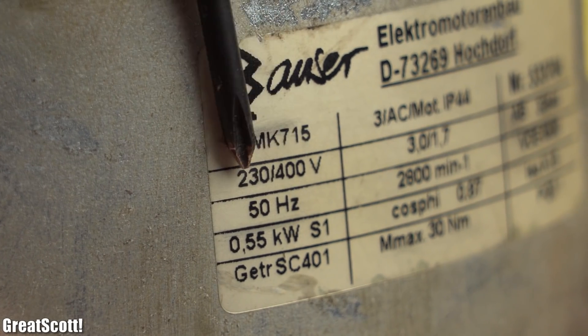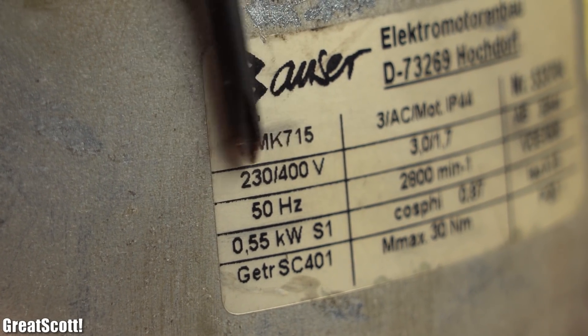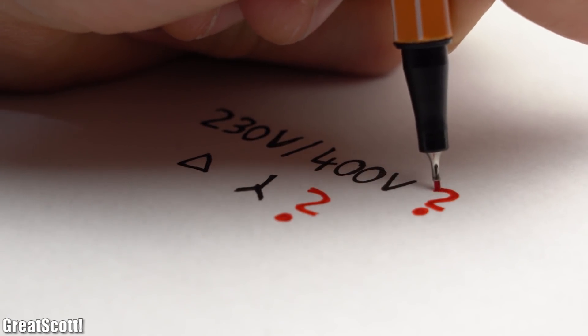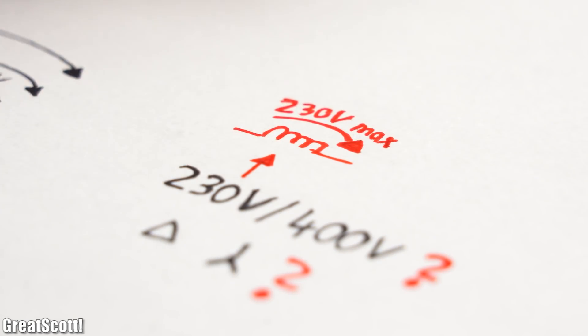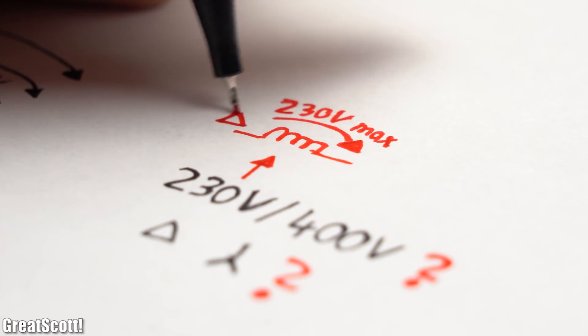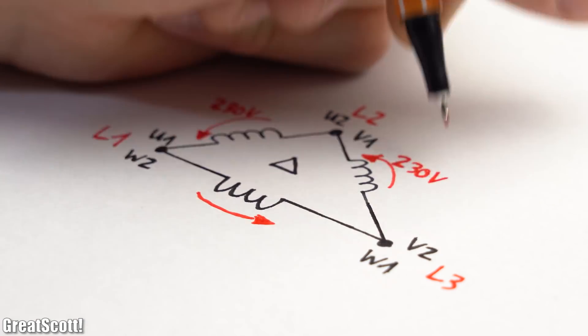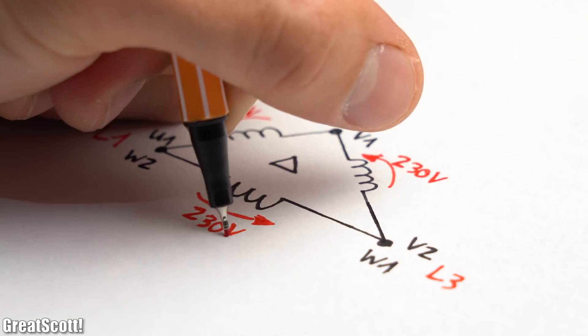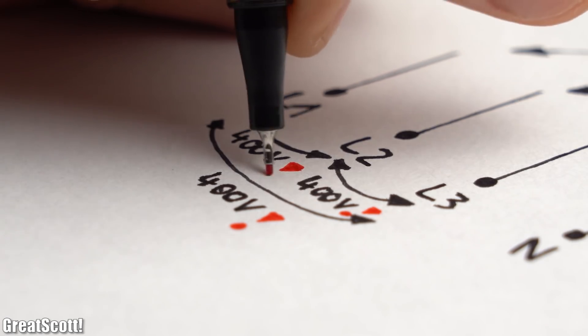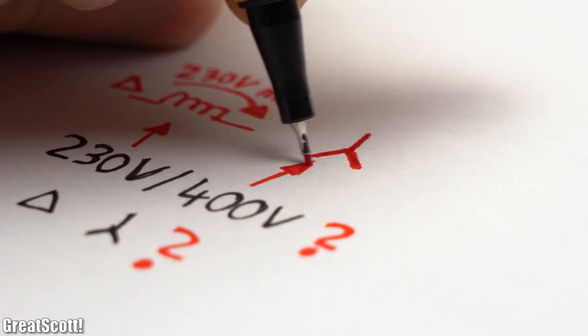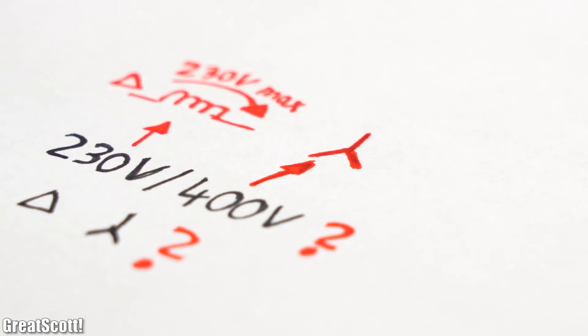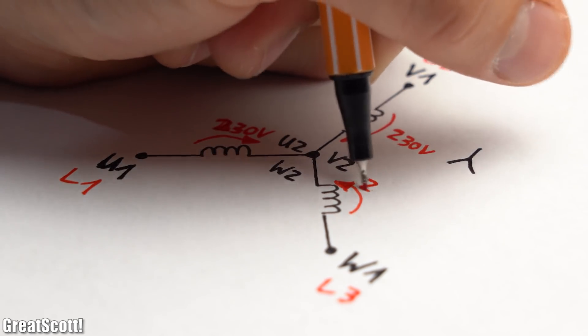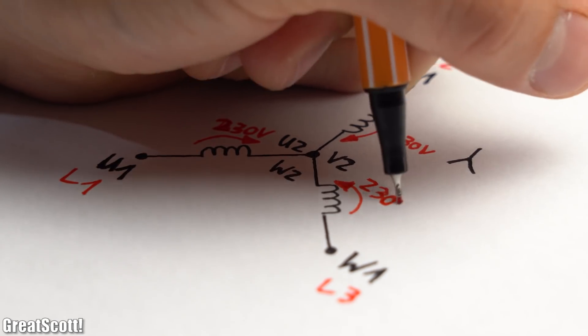But what does this 230V slash 400V mean? Should I use 230V or 400V? And with what motor coil configuration? Well, the first number basically says what maximum voltage the coils can handle and thus if we would have 230V between phases we could directly apply them to each coil through the delta configuration. But since we got 400V between the phases we have to follow the second 400V rating which says that you should use a star configuration at 400V levels since that will reduce the voltages across each coil to 230V.